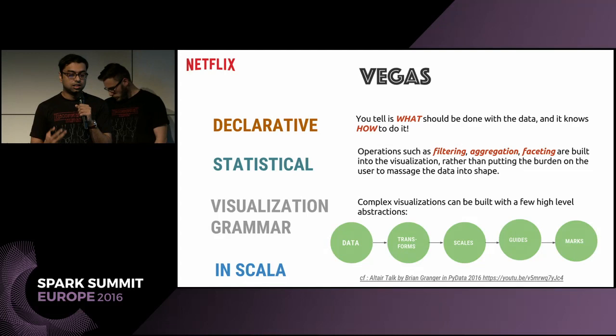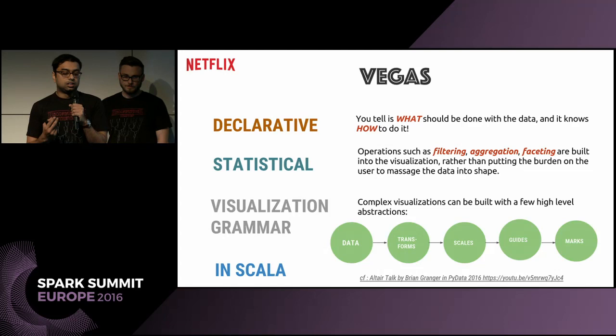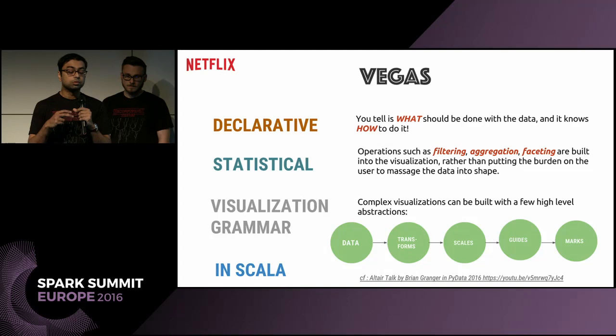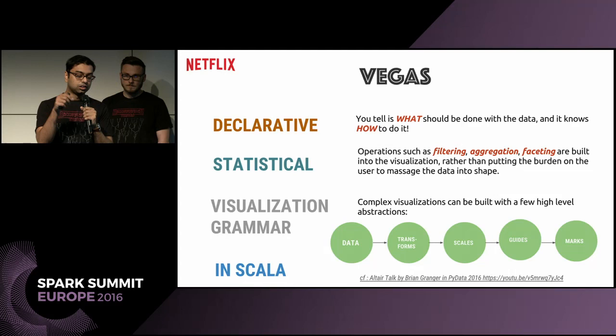It's statistical because most of the simpler filtering, aggregation, faceting, as well as descriptive statistics are built into the tool. And it's a grammar because you use simple, high-level abstractions to create a very complex visualisation. You start with the data, apply some transforms, say how you want to scale the data to visual aspects on the canvas, put guides on the canvas, and put the marks on for each data point — whether it's a bar, circle, or whatever. You specify all those things in a simple, concise statement.